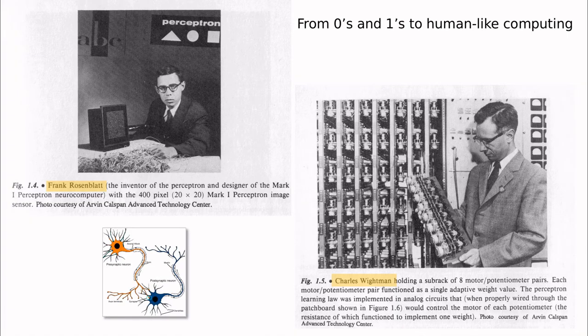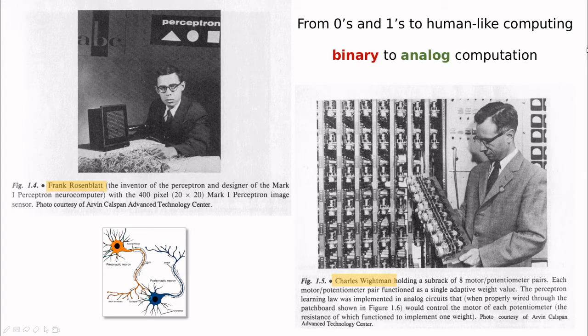Why is this relevant to machine learning? Well, back in the 40s and 50s in the last century, guys like Frank Rosenblatt and Charles Wyman had this idea. If we want to go from 0s and 1s to more human-like computing, we have to think like neurons.